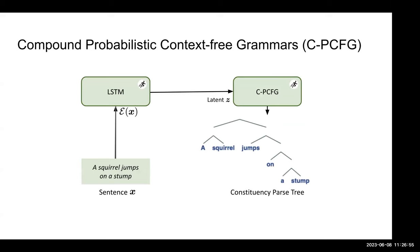Among well-recognized unsupervised methods, the Compound Probabilistic Context-Free Grammar (CPCFG) is one of the most popular. The workflow is: we input a sentence into an LSTM and obtain the latent Z. Together with the word embedding of the sentence, we feed them into the CPCFG, which then outputs the corresponding constituent parse tree.